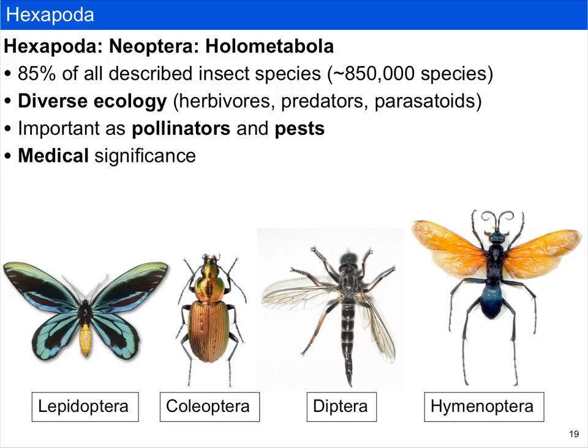The holometabola includes about 85% of all described insect species and has a remarkably diverse ecology including herbivores, predators, parasites, and parasitoids. They're super important both as pollinators and pests, and some have medical significance — mosquitoes, for example, are part of Diptera and transmit malaria.